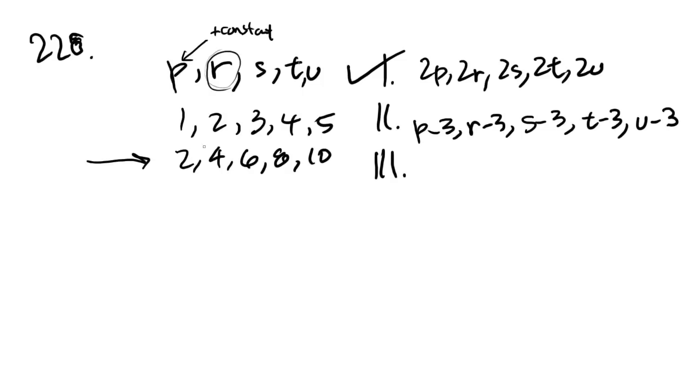For example, if we used 1, 2, 3, 4, 5, and we subtracted 3, we would get negative 2, negative 1, 0, 1, and 2. And negative 1 is negative 2 plus 1. 0 is negative 1 plus 1. The plus 1 is the same constant. It's the constant for this entire sequence. So 2 is definitely true.